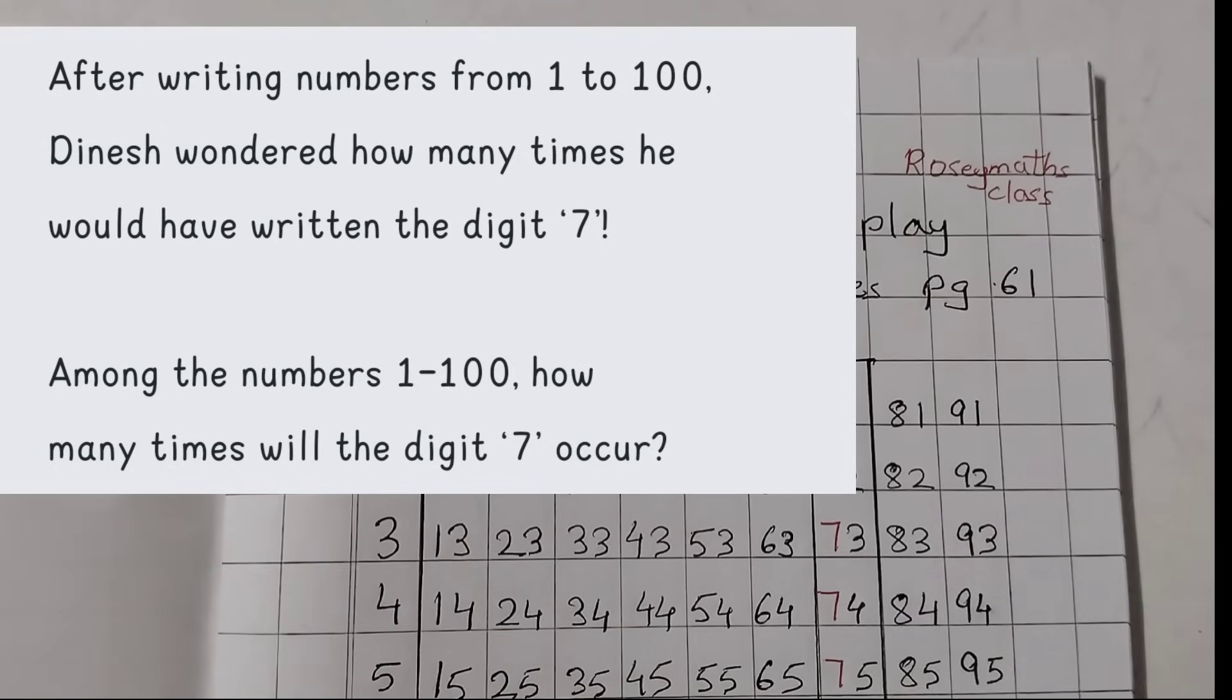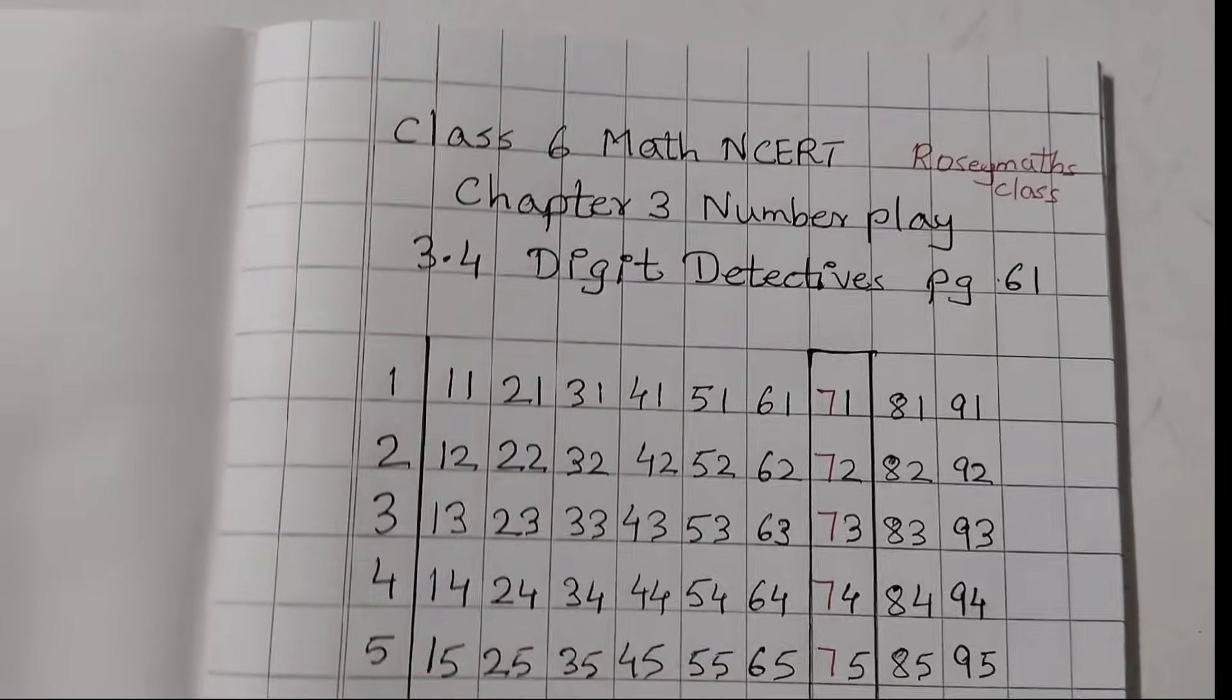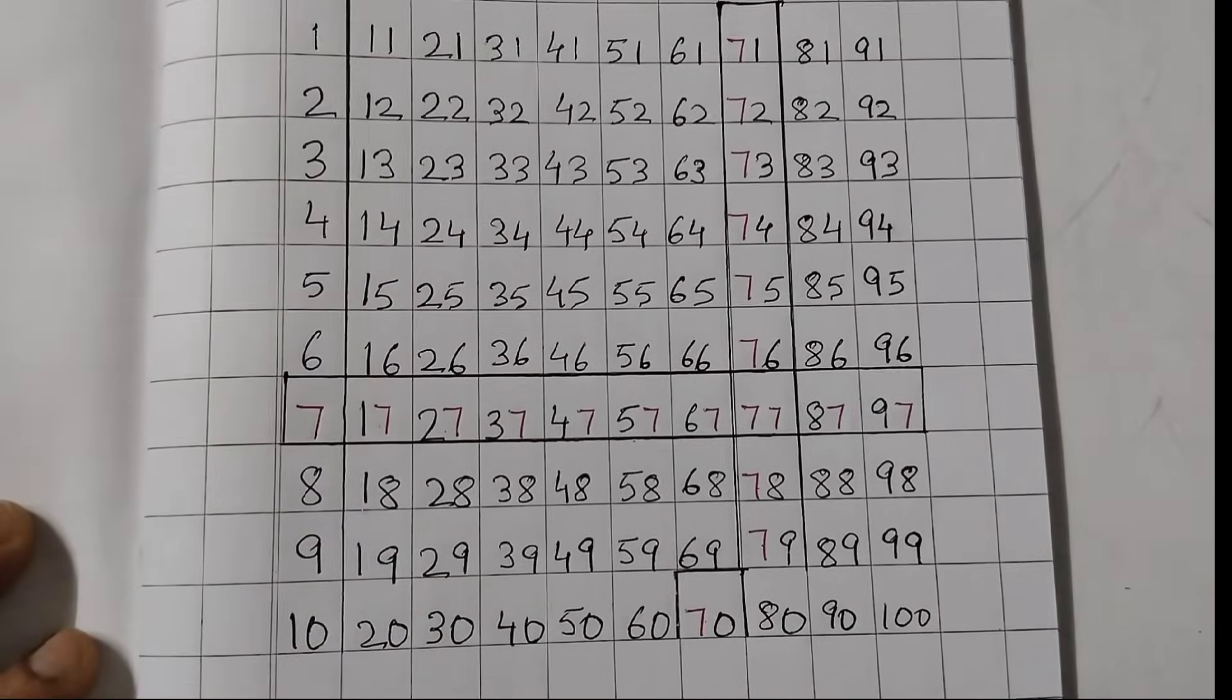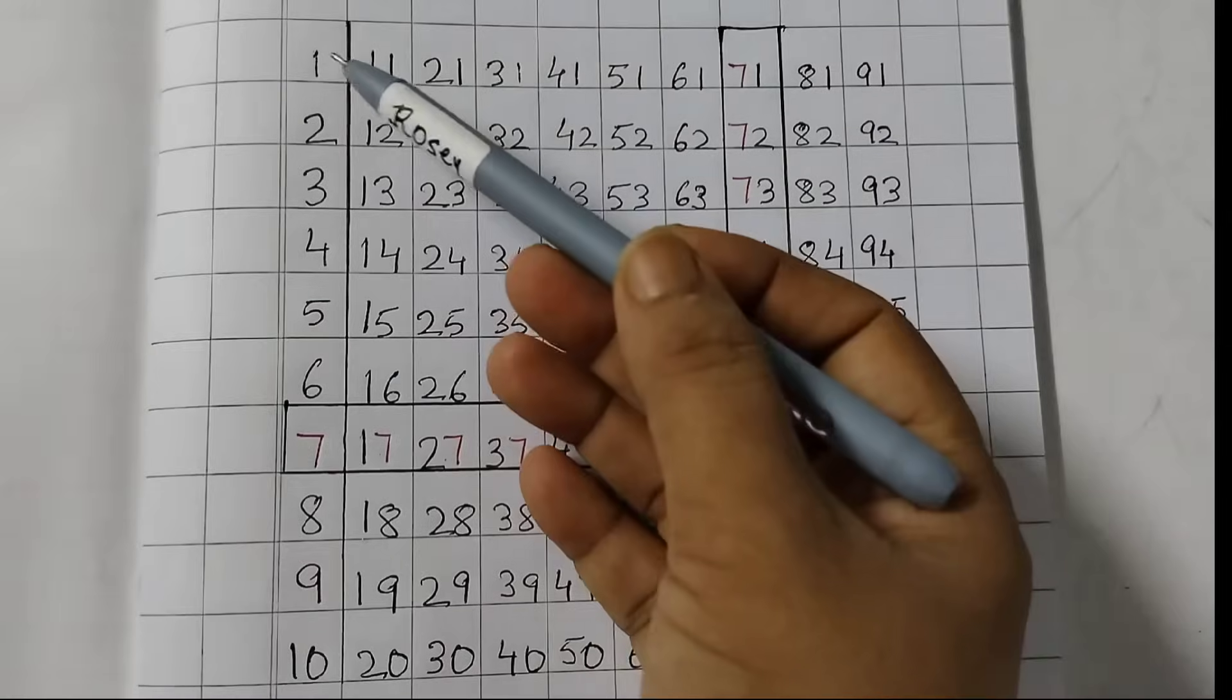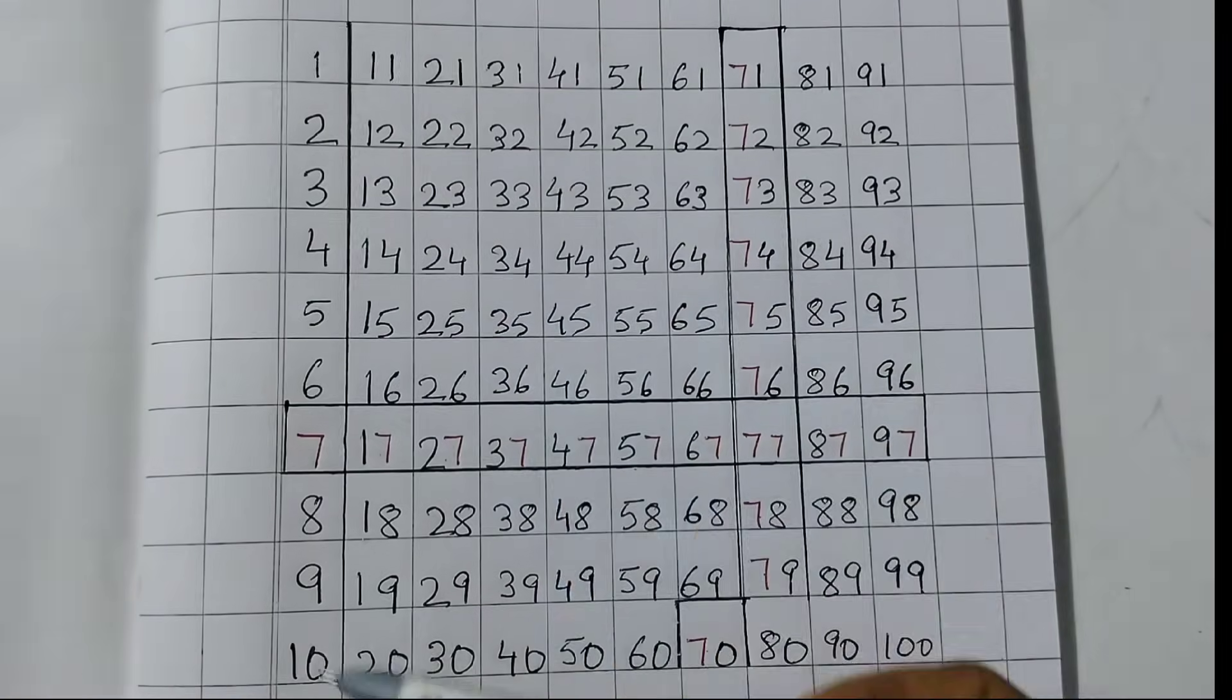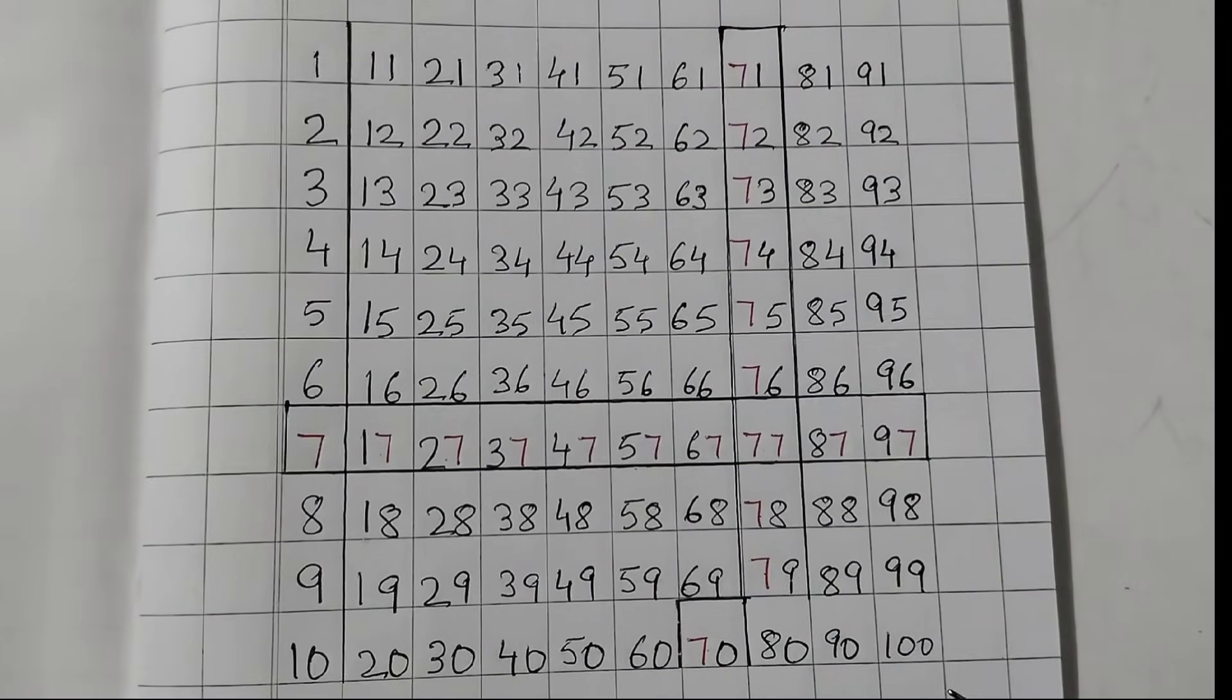This is the first part of the question where Dinesh is writing numbers 1 to 100. I have written the numbers 1 to 100 here. You can see 1, 2, 3, 4 and it goes till 100. So Dinesh has written numbers 1 to 100. Now, among these numbers, how many times will the digit 7 occur? That we need to find out.